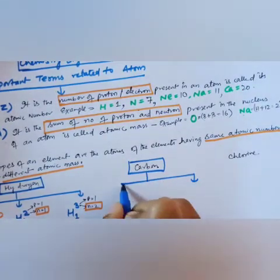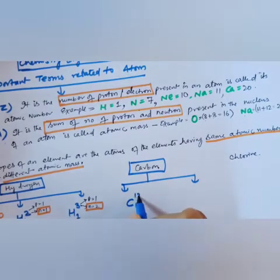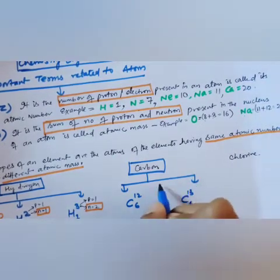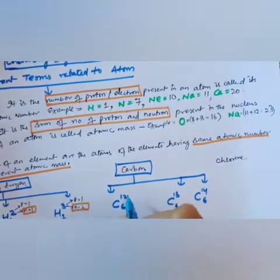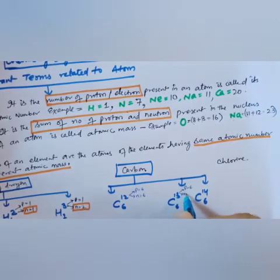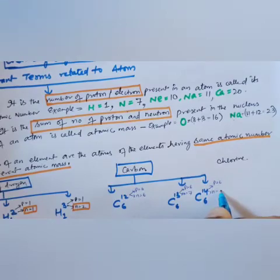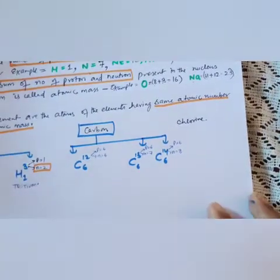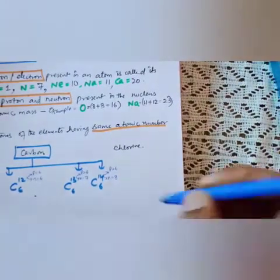Similarly, carbon has isotopes. Carbon's atomic number is 6. In C-12, there are 6 protons and 6 neutrons. In C-13, there are 6 protons and 7 neutrons. In C-14, there are 6 protons and 8 neutrons. Again, the neutron count increases while protons and electrons cannot increase.